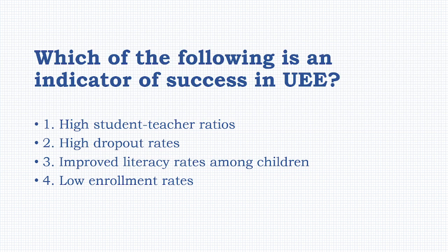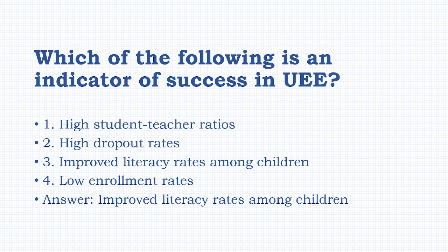Which of the following is an indicator of success in UEE? Options: high student-teacher ratio, high dropout ratio, improved literacy rate among children, low enrollment ratio. The answer is: improved literacy rate among children.